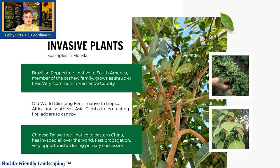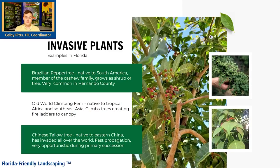Another example is the Chinese tallow tree. They're everywhere at this point — native to China but absolutely everywhere. People like them quite a bit, sort of like camphor trees. They're pretty, and if they've been in your yard a long time you typically don't mess with them. But they are invasive, propagate very quickly, and are very opportunistic. During primary succession — after an event that wipes out most vegetation — they'll be one of the first things to come up and dominate that landscape.